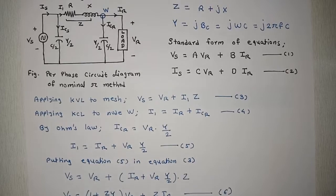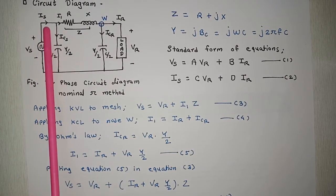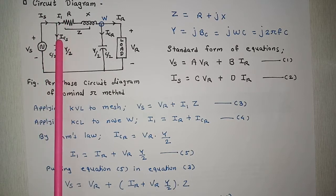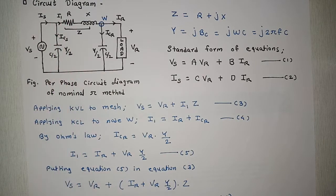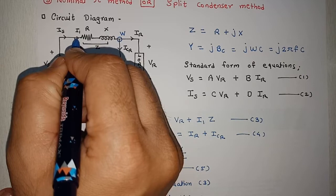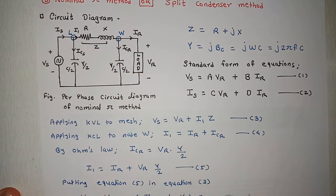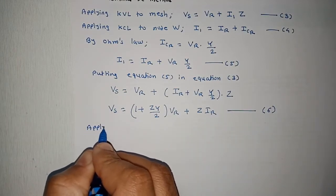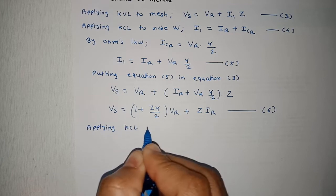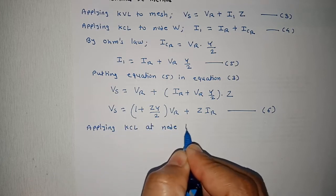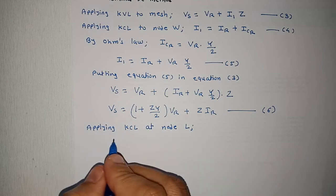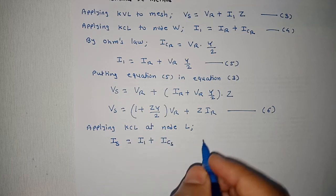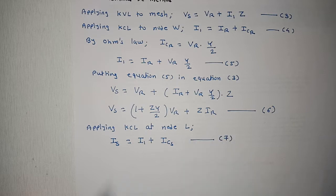We also require Is. We can apply KCL at node L to express Is. Applying Kirchhoff's current law at node L: Is = I1 + Ics (equation 7). I1 is already known from equation 5 in terms of IR and Vr. We need to find Ics.